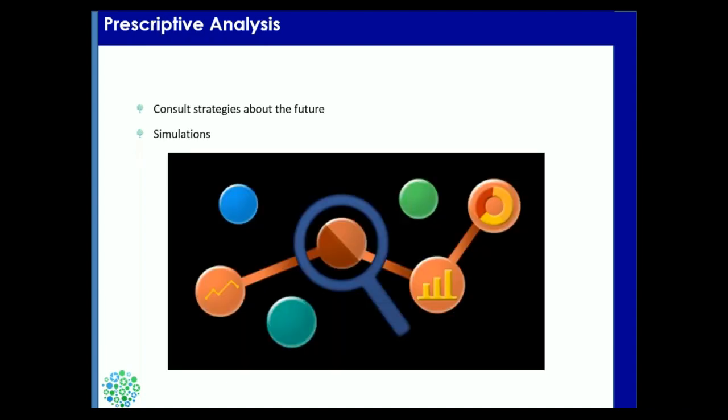So once we have done that, we then move on to the final type of analysis, which is the prescriptive analysis. Prescriptive analytics is relatively a new field in data science in the sense that it goes a step further than both descriptives and predictive analytics.